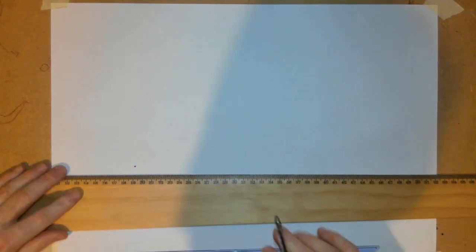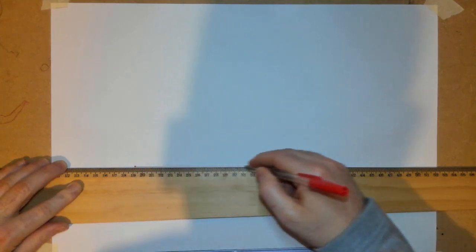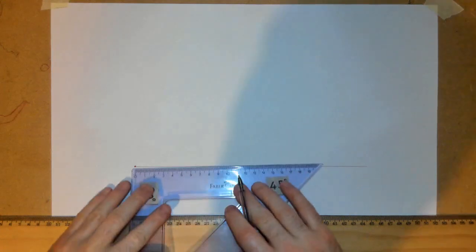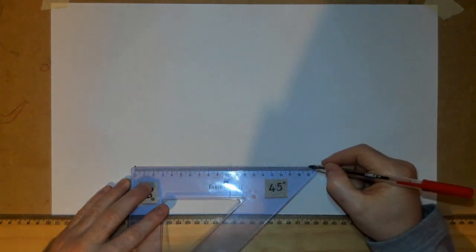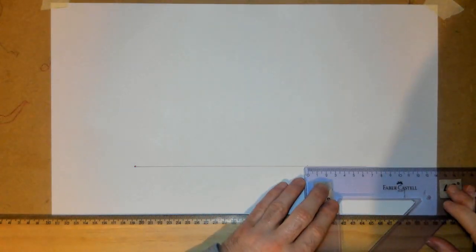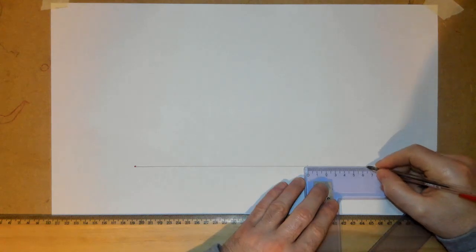If your set square doesn't reach that, you can see here mine only goes out to the 19, so I'm marked to the 19 and I'll add on another 70. So extend it a little further there. From here to here is my 260 millimeters.